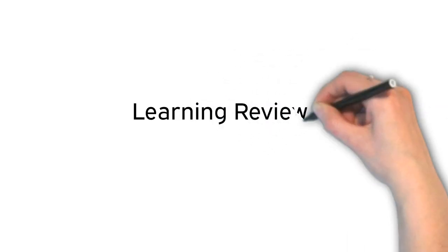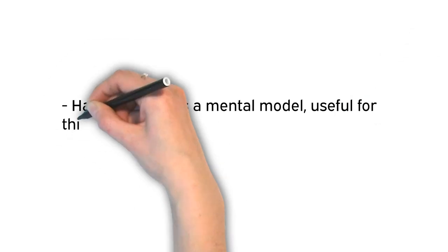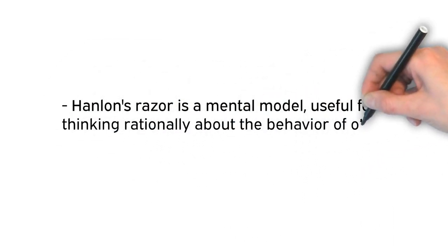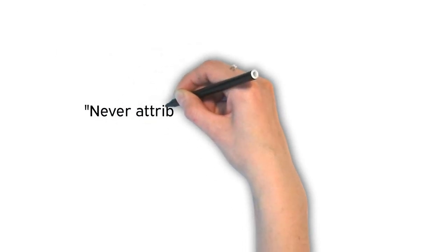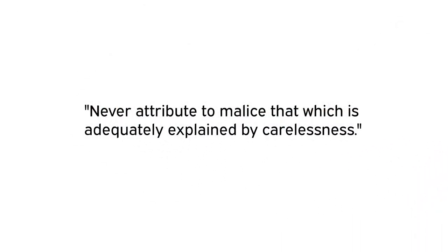Now let's review the important points of what we've covered. Hanlon's razor is a mental model useful for thinking rationally about the behavior of others. Hanlon's razor says: Never attribute to malice that which is adequately explained by carelessness.